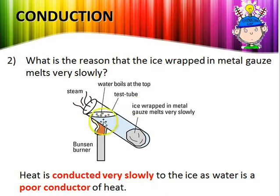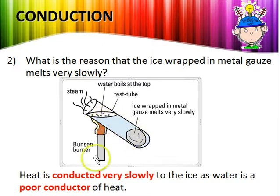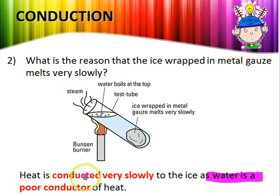Consider this example: ice sits on a wire gauze and melts very slowly, even though the flame is heating the water below. The only way heat can travel from the water to the ice is through conduction. Because the ice melts very slowly, the heat must be conducted very slowly through the water — meaning the heat doesn't reach the ice efficiently. This shows that water is a poor conductor of heat.